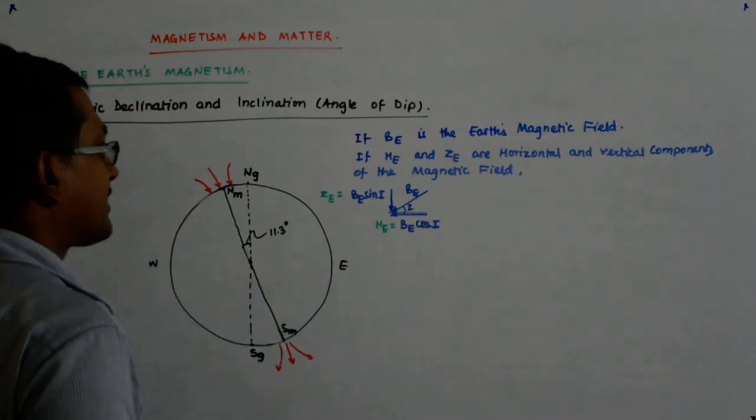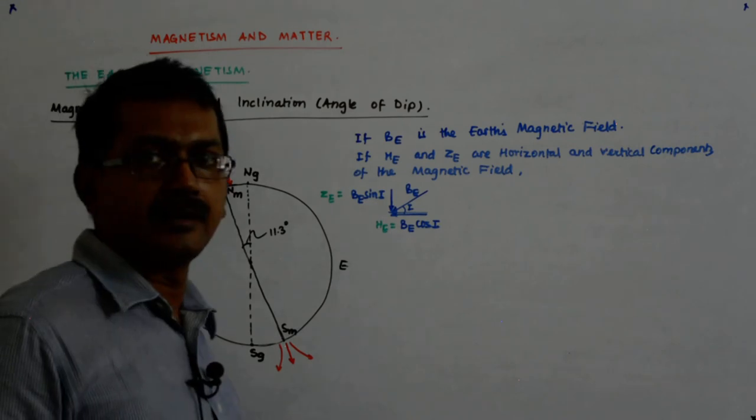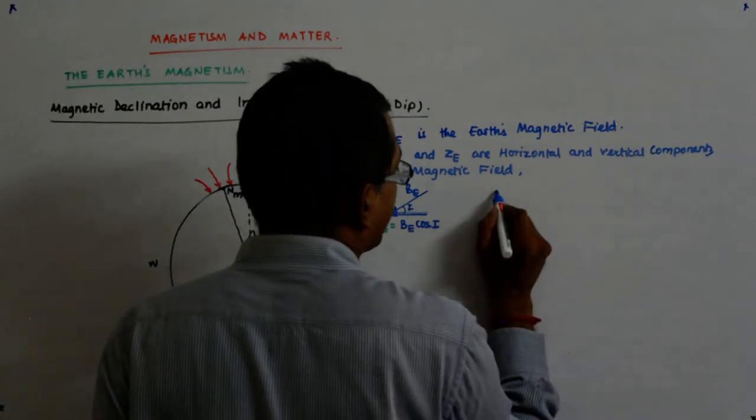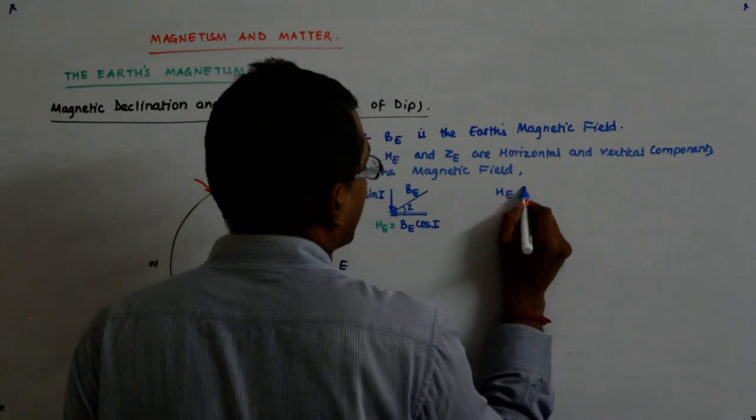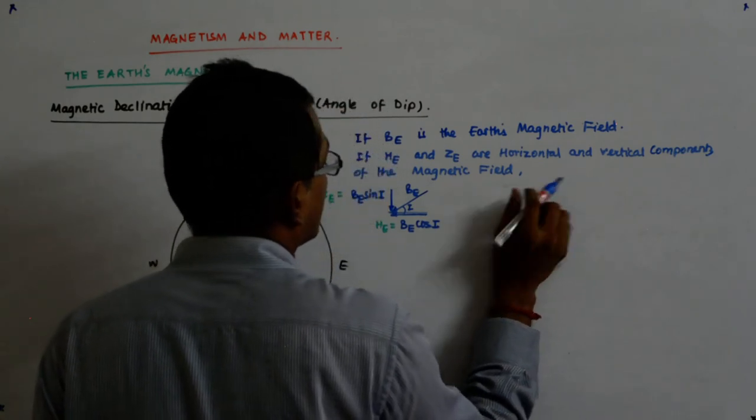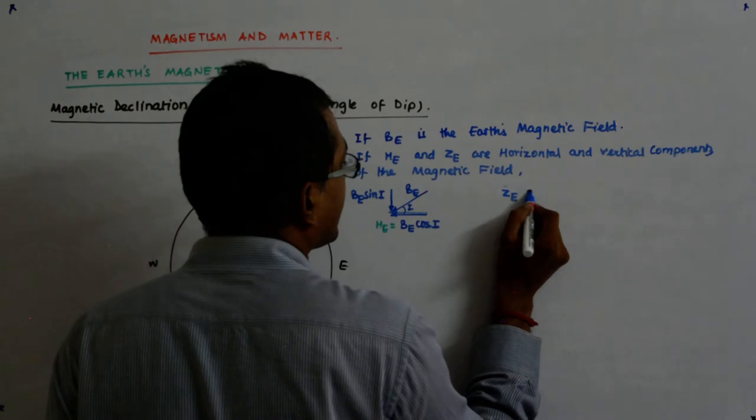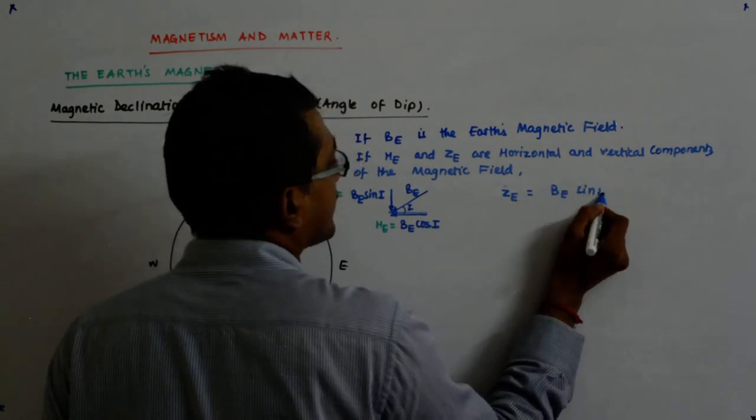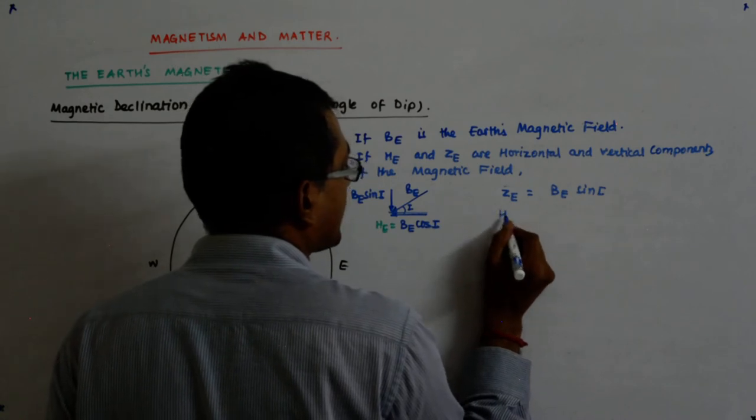If H_E and Z_E are horizontal and vertical components of the magnetic field, then we have just seen that Z_E is equal to B_E sine I and H_E is equal to B_E cos I.